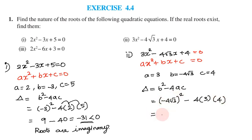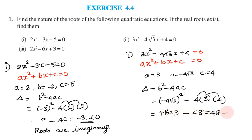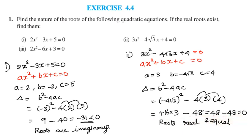Calculating: (-4√3)² = 16 × 3 = 48, and 4 × 3 × 4 = 48. So Δ = 48 - 48 = 0. Since the discriminant is equal to 0, the roots are real and equal.